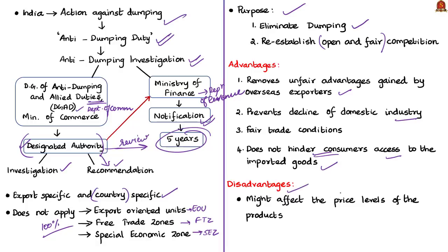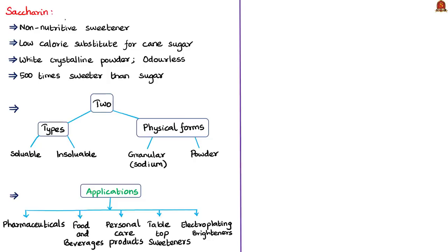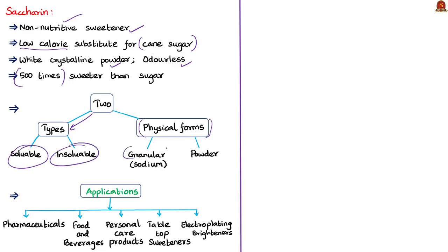There is one disadvantage: the imposition of anti-dumping duty might affect price levels of products manufactured using the subject goods. However, fair competition in the Indian market will not be reduced by the anti-dumping measures. Now, some facts about saccharine: it is a non-nutritive sweetener considered a low-calorie substitute for cane sugar. It is a white crystalline, odorless powder and is more than 500 times sweeter than sugar. Saccharine can be divided into two types — soluble and insoluble — with two physical forms: granular and powder.